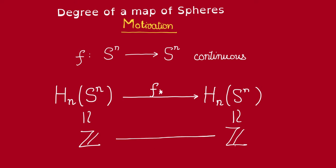So, we can define the degree of f to be the unique integer making this square commute. In other words, this induced map on this nth homology is gonna be multiplication by some integer. That integer is the degree of f. Up next, we're gonna talk about some basic properties of degree.